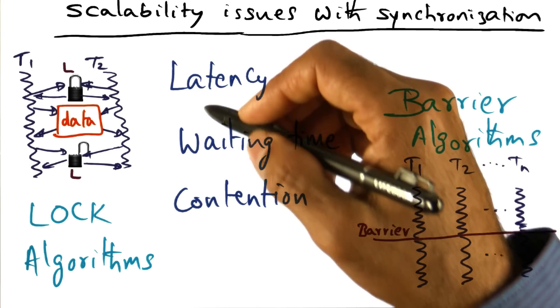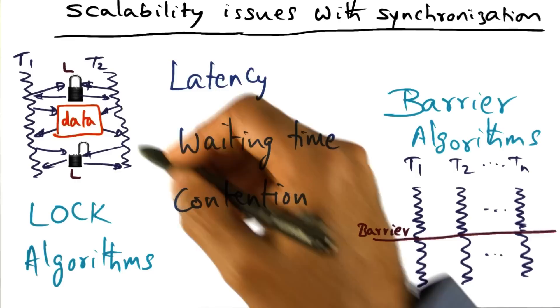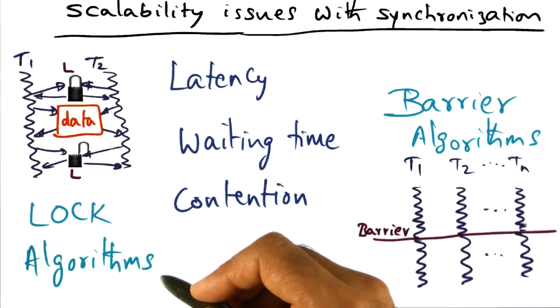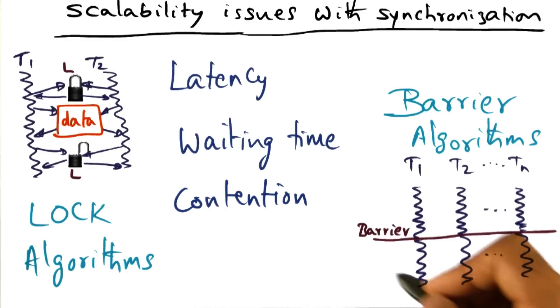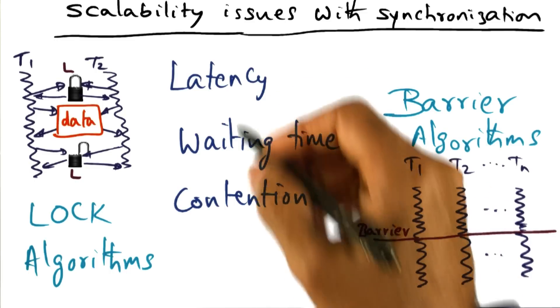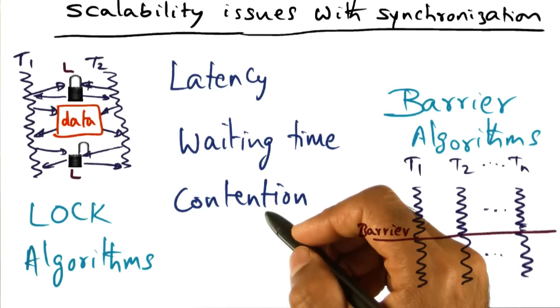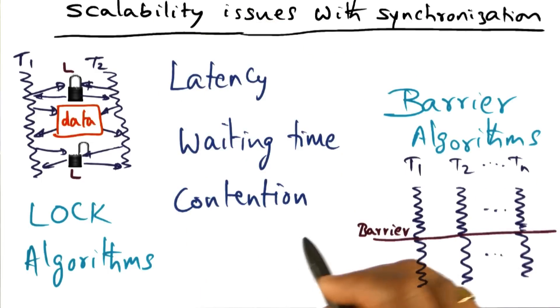All of these things - latency, waiting time, and contention - even though I mentioned them in the context of a mutual exclusion lock, appear when you're talking about barrier synchronization algorithms or shared locks. So latency and contention are two things, as OS designers, we have to always be worried about in implementing scalable versions of synchronization primitives.